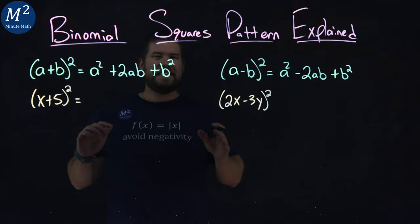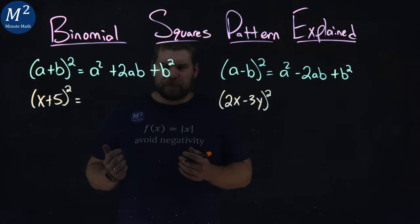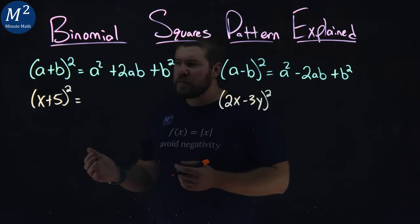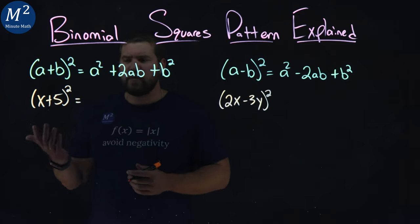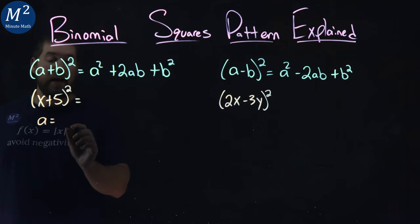So let's see each one of these in a practical application. Our first one, x plus 5 all squared. What's my a value here? a value is my x value. My b value, the second value here, is a 5.